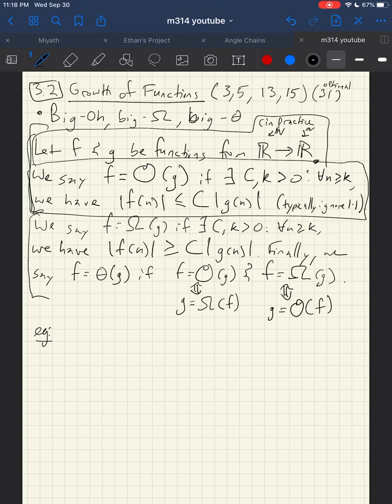Now, let me do a quick example. And like I said, we'll probably have to do more examples another time. But let's show that three n squared plus two is big O of n cubed. So in order to show this, what I need to do is find these constants c and k. By the way, the c and k are called witnesses.